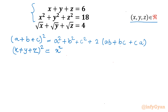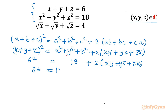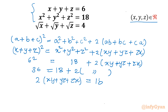(x plus y plus z) whole square equals x squared plus y squared plus z squared plus 2 times (xy plus yz plus zx). Putting in the values: 6 squared equals 18 plus 2 times (xy plus yz plus zx). So 36 equals 18 plus 2 times (xy plus yz plus zx), giving us 2 times (xy plus yz plus zx) equals 18, and therefore xy plus yz plus zx equals 9.